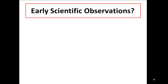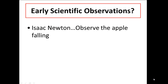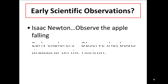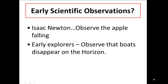What are some early scientific discoveries that scientists had to ask questions about? We all know Isaac Newton — a famous apple was falling and he asked why do things fall. He observed the apple fall, observed other things falling, and noted that things always fall downwards. Early explorers also observed that boats disappear over the horizon, and once again it started with an observation.